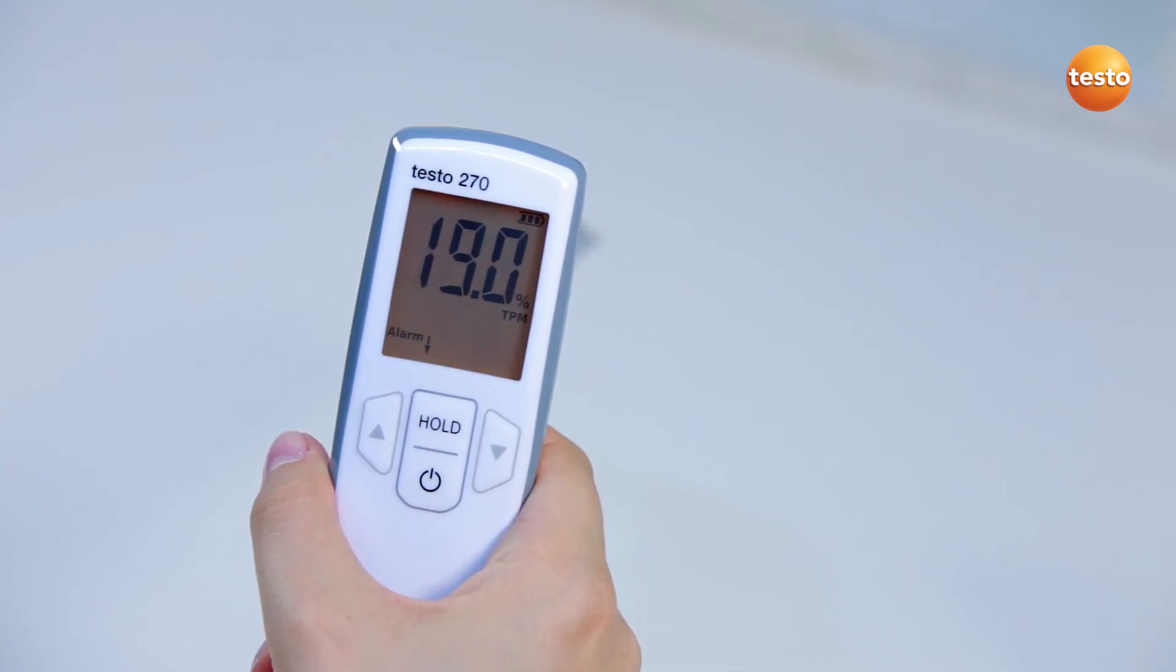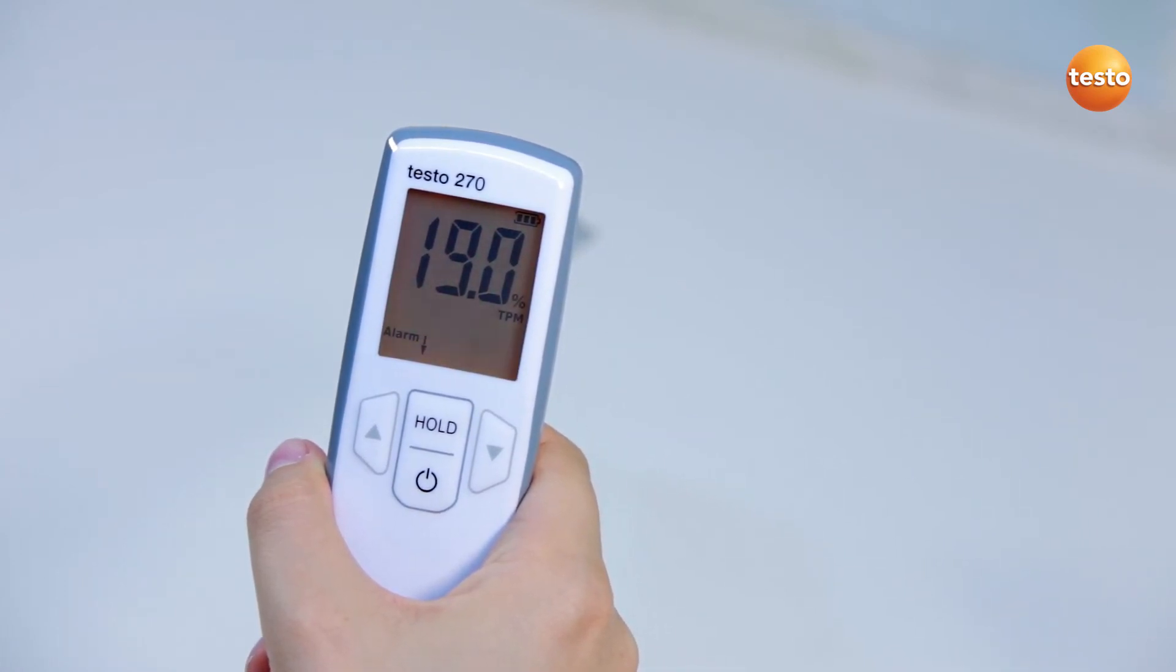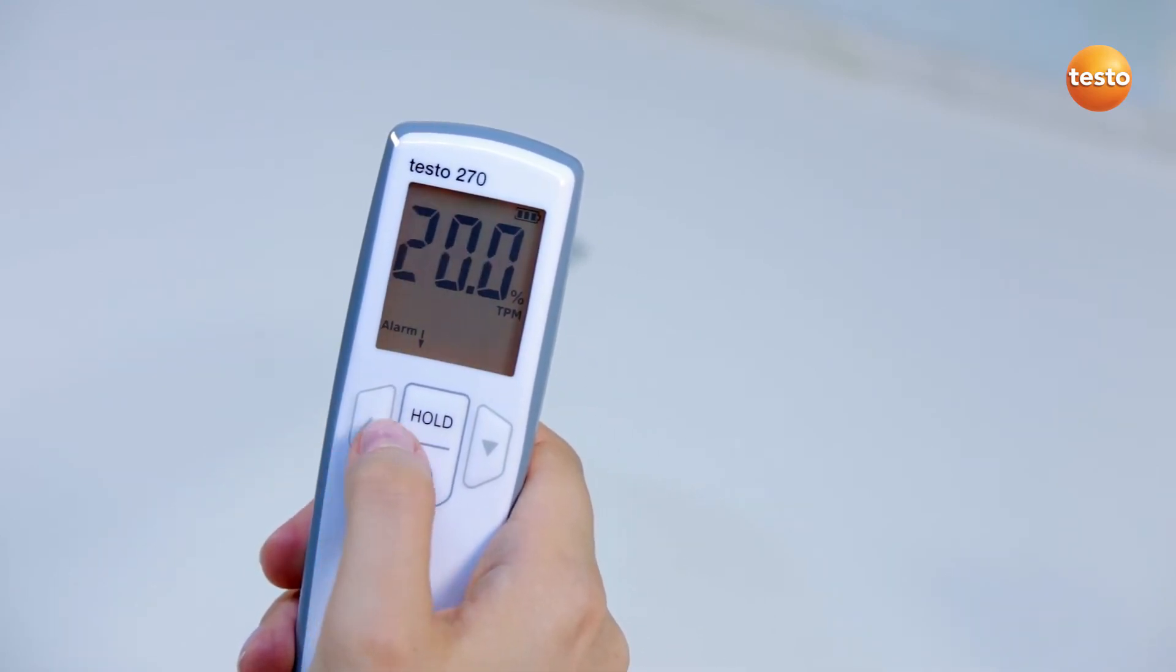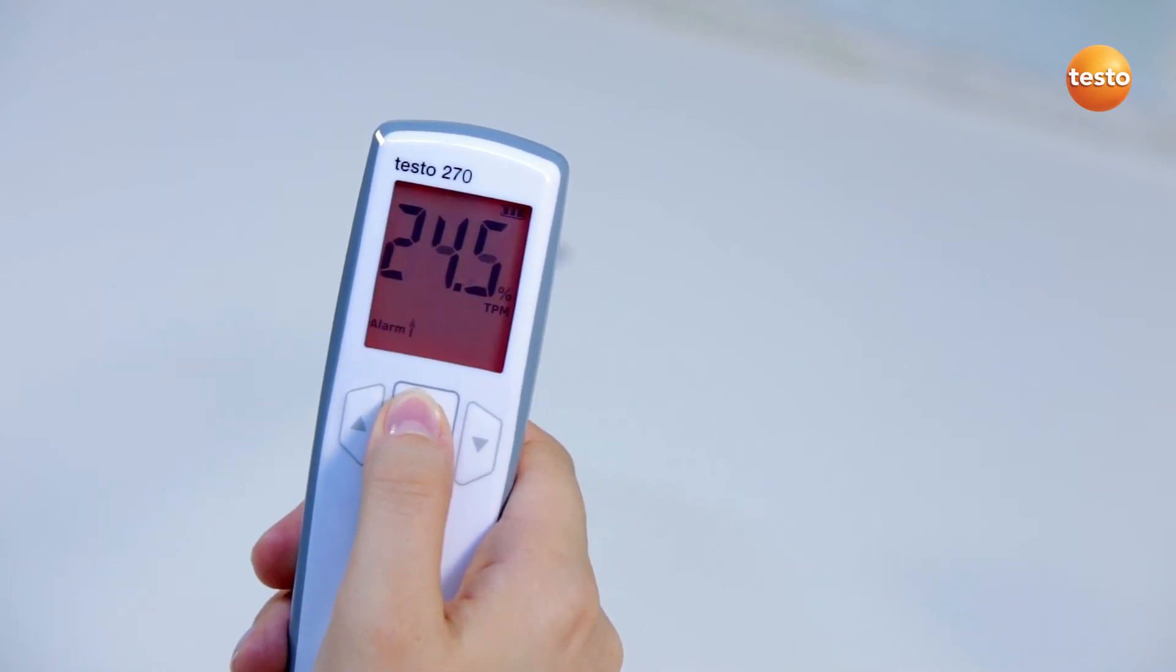In the first menu item, I can define my TPM limit values. With the arrow buttons, I change the lower limit value and confirm with the hold button.